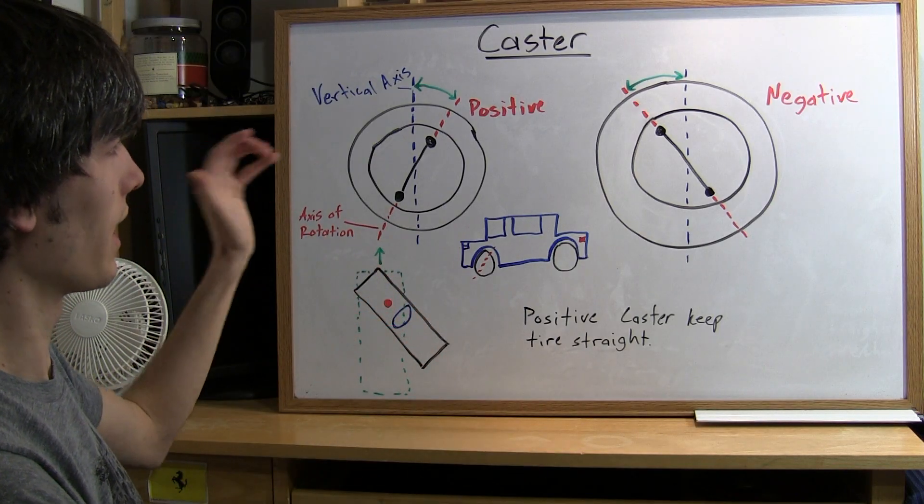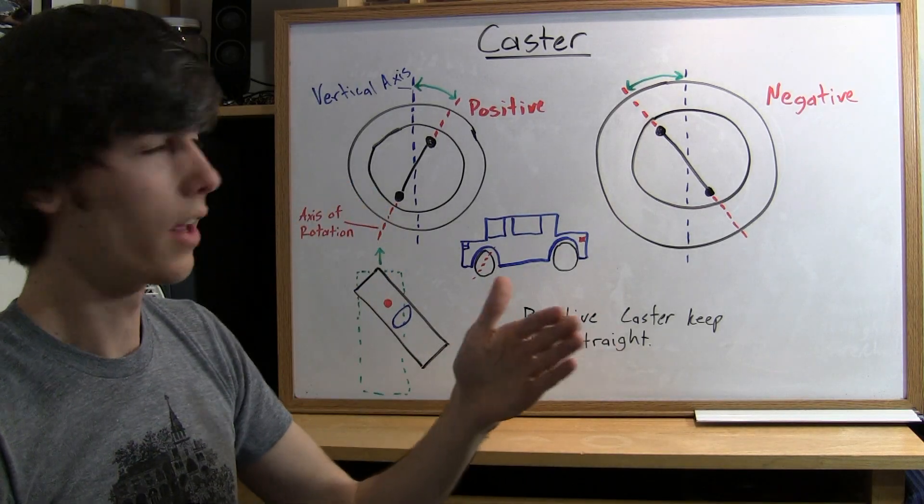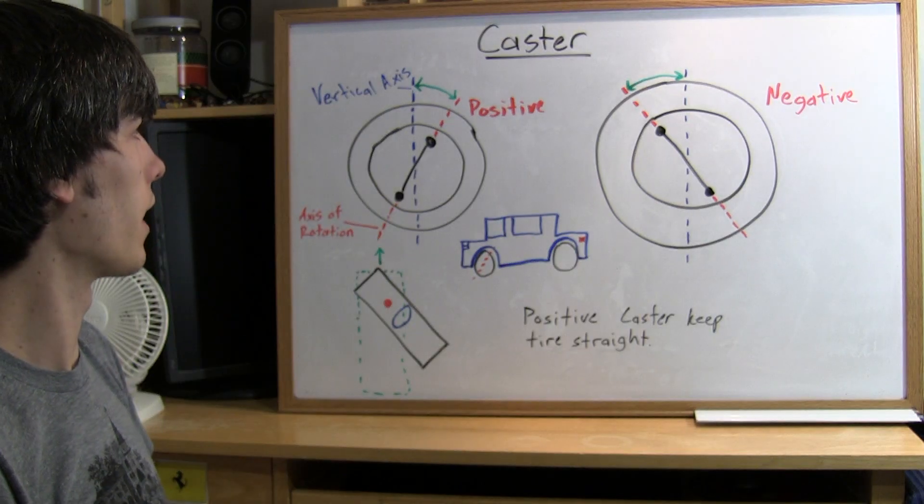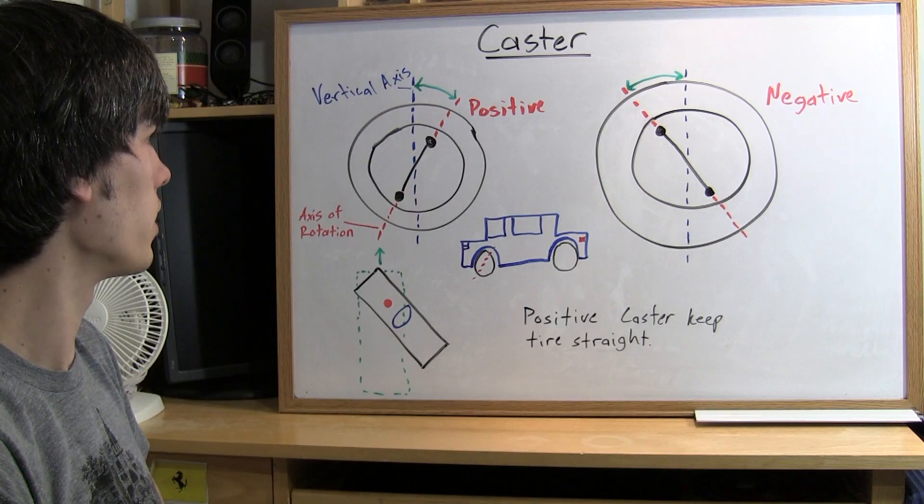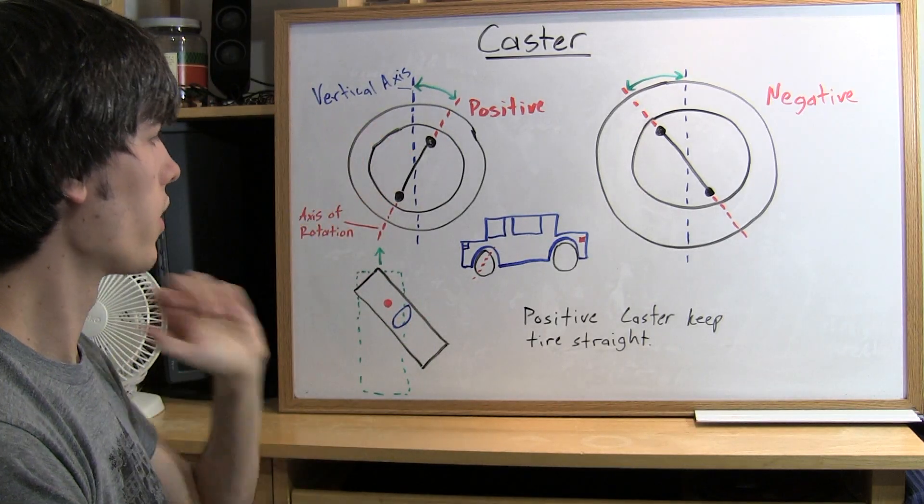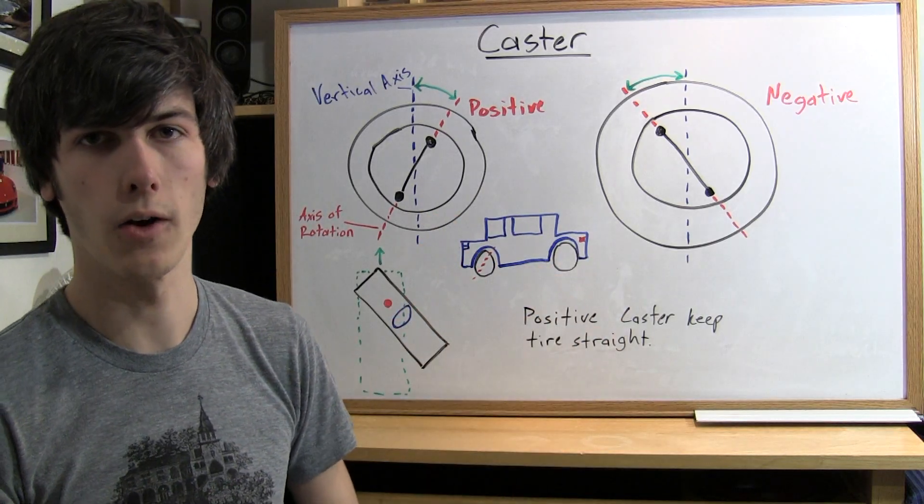Now if you had a negative caster then you're trying to do this in reverse and it's going to make the tire very unstable if you're going at any sort of speed. So most vehicles are going to have this positive caster so that as the tire rotates and you let go of the steering wheel it automatically straightens out.